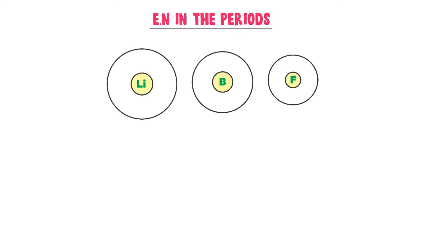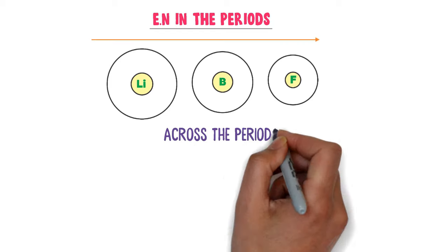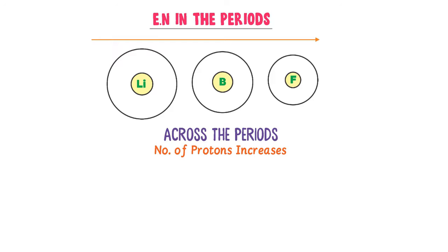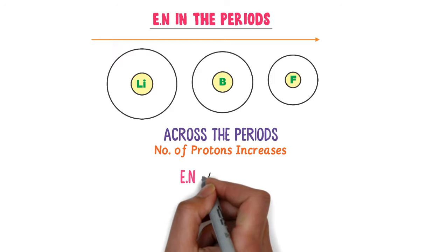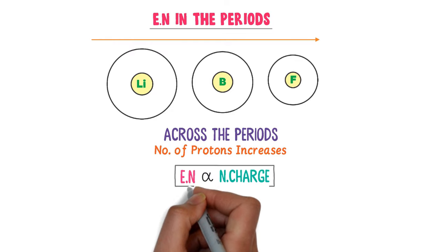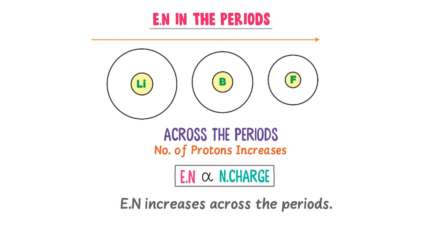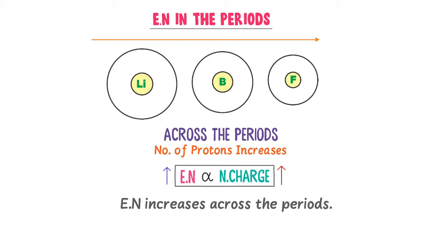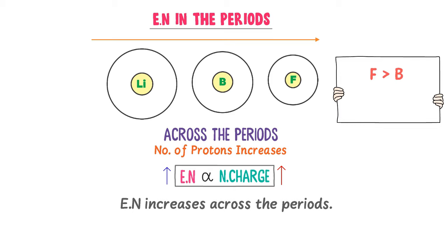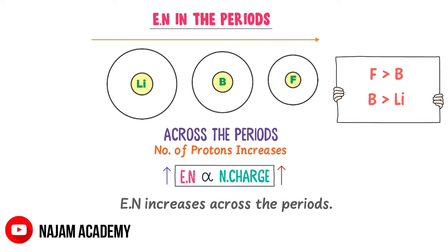Secondly, electronegativity across the period. Consider the period 2 elements in the periodic table. When we move from left to right across the period, the number of protons or nuclear charge increases. Since electronegativity is directly proportional to nuclear charge, electronegativity increases from left to right across the period. This means fluorine is more electronegative than boron, while boron is more electronegative than lithium. Note it down: electronegativity increases across the period.